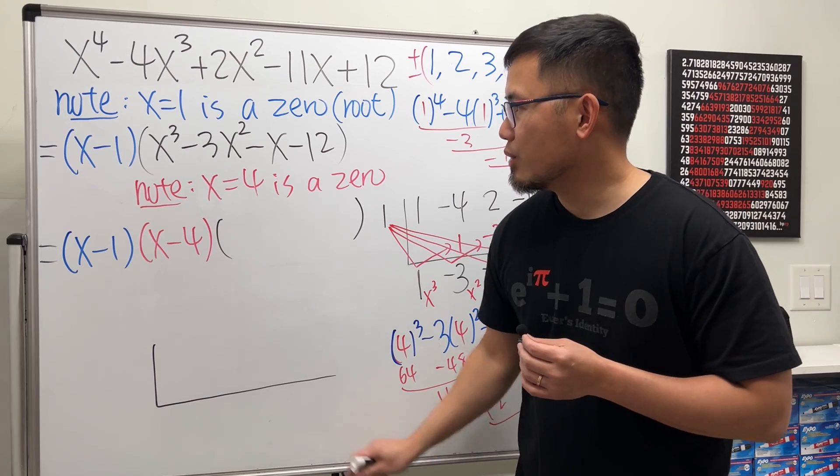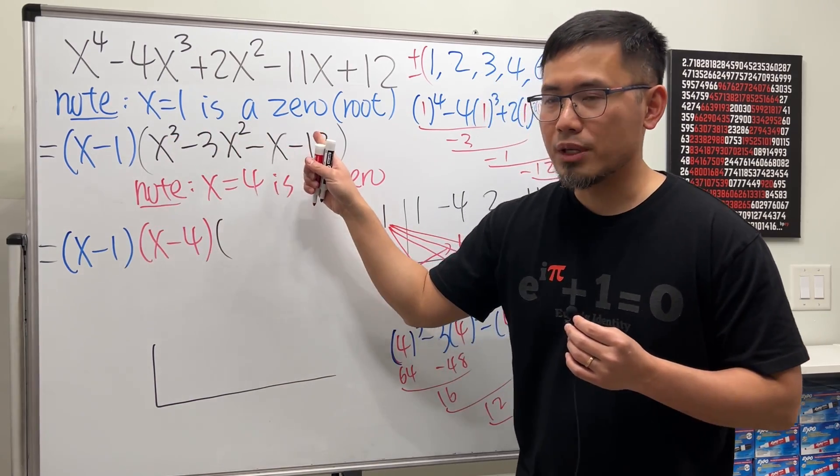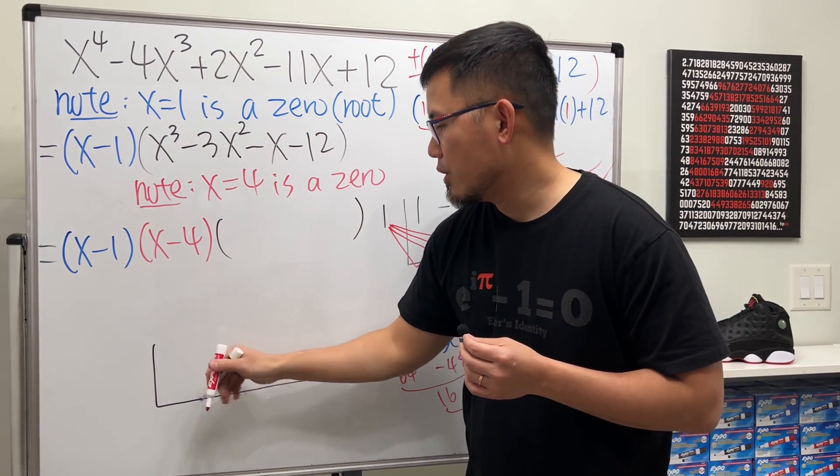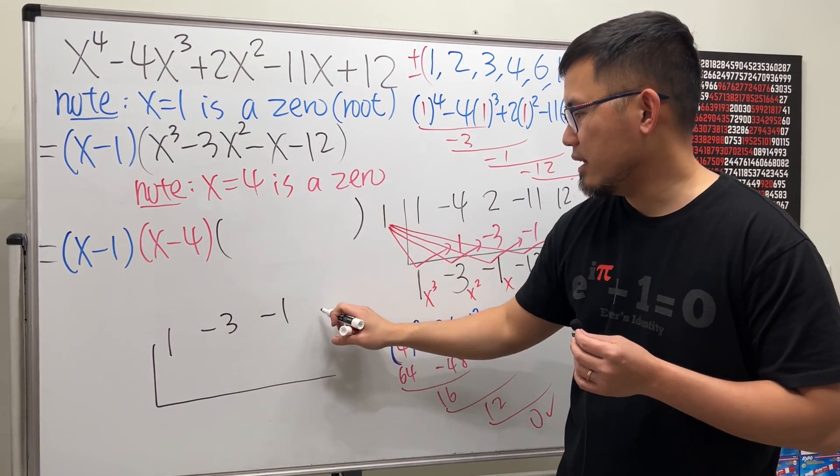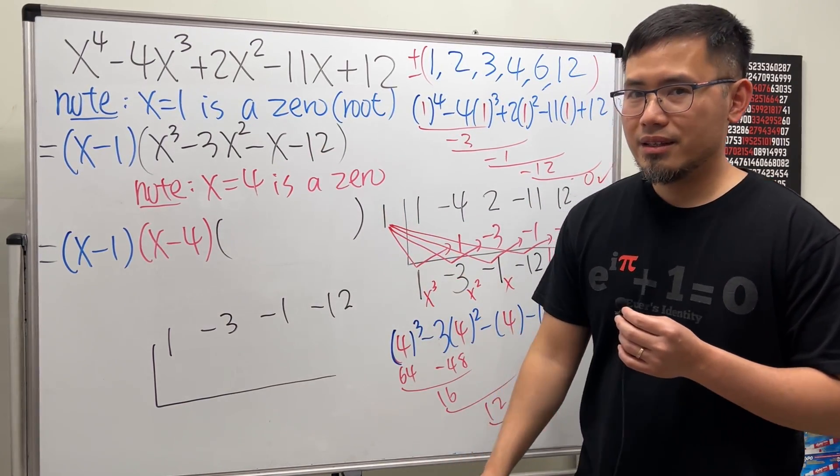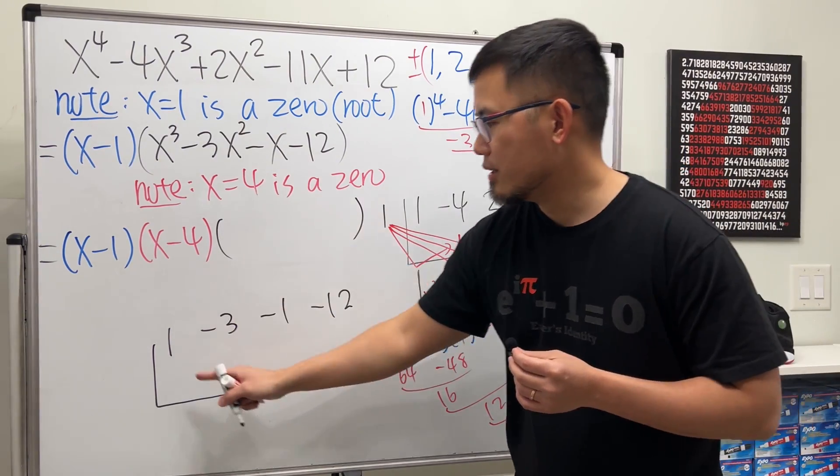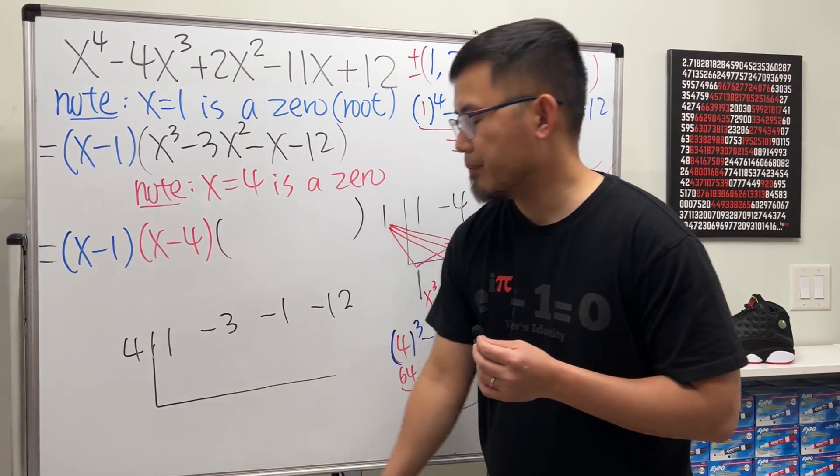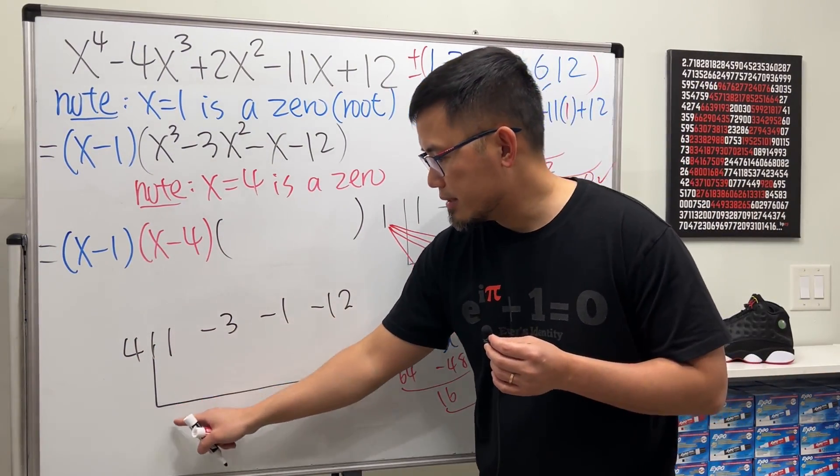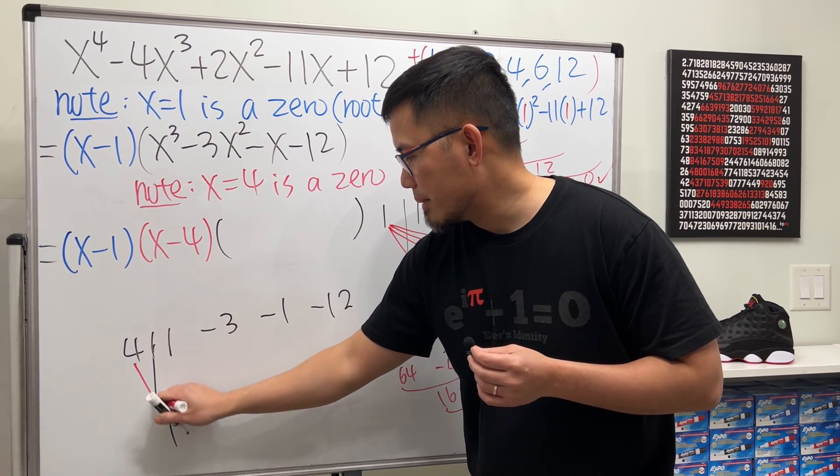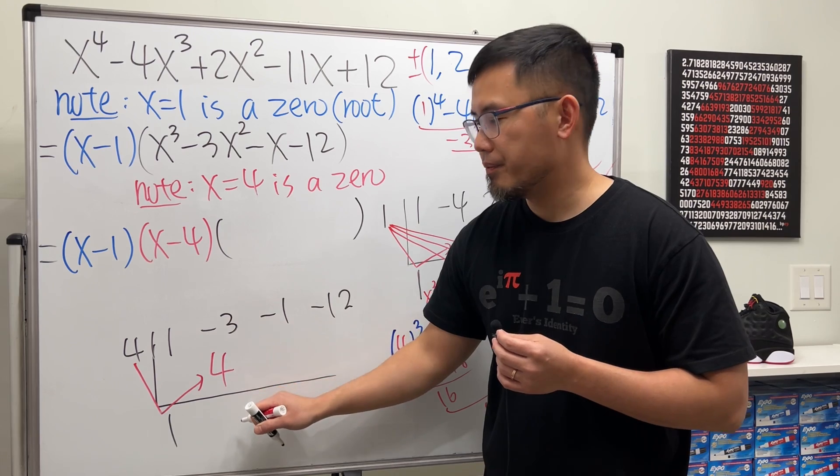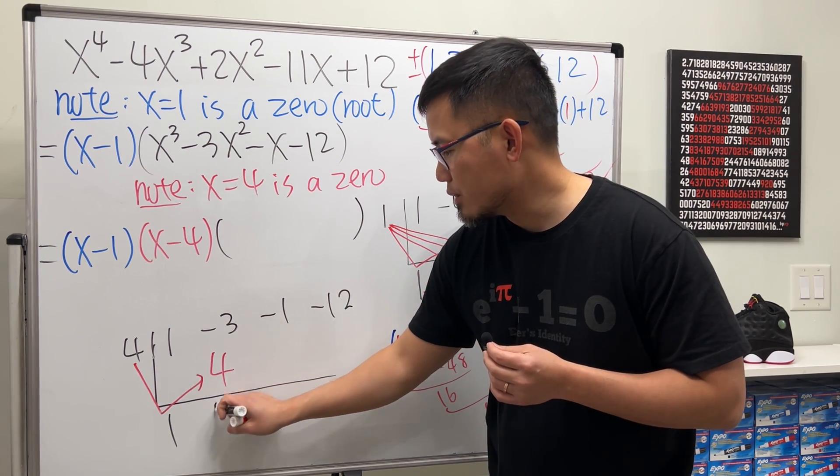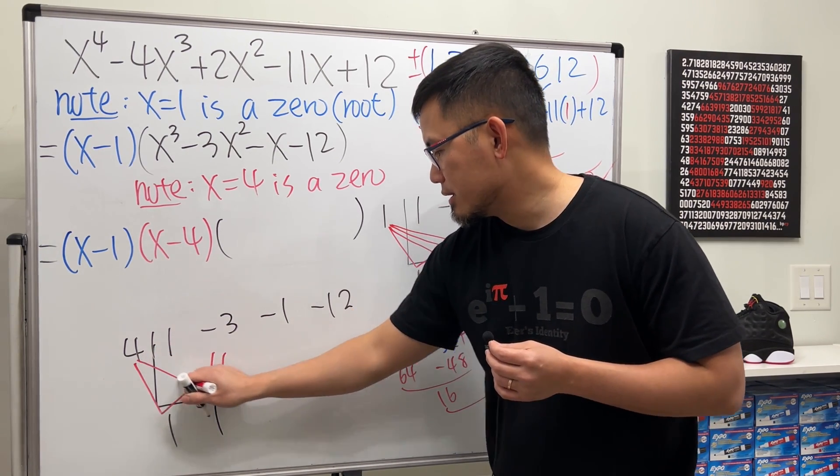I'm just going to write down the coefficients, and all the powers are present so we can just write down 1, negative 3, negative 1, and negative 12. This time we are using 4, so put a 4 right here. And here we go, bring this down, and then we do 4 times 1 which is 4, put it here. And then we add them: negative 3 plus 4 is positive 1. And then continue, this times this is 4.